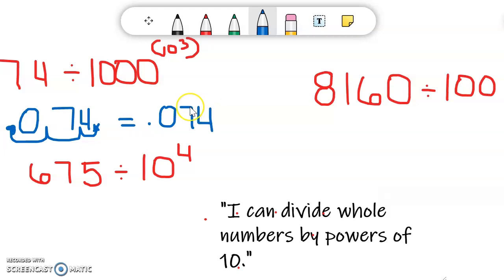So let's look at the next example. The next example is 675 divided by 10 to the fourth power. So first step, I want to write my whole number, which is 675.